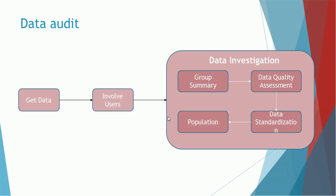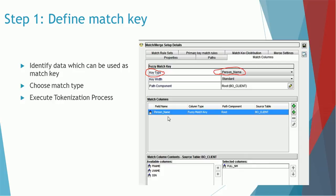We also have to choose the population, which is also important. The reason is that if your data belongs to different countries or regions, names have different meanings. For example, in America, Mike and Michael are treated as the same name, and Robert and Bob are also treated the same — but these names may not have the same meaning in different countries. So the population is a very important criterion. If you have only one country, define that country as the population (like US). If your dataset involves multiple countries such as the United States, UK, China, Japan, or India, define the population as International.